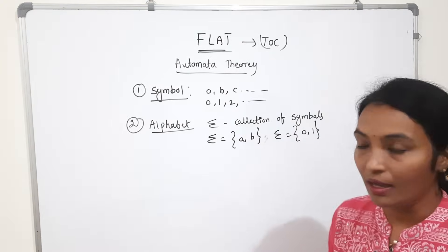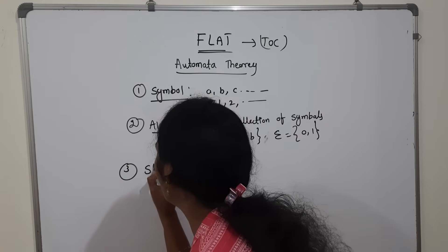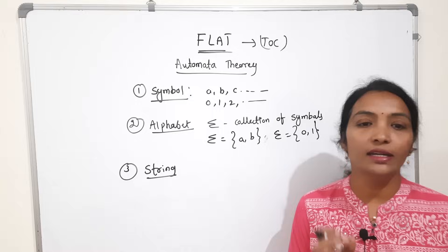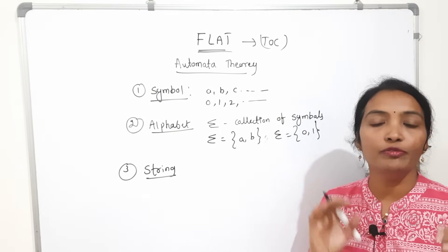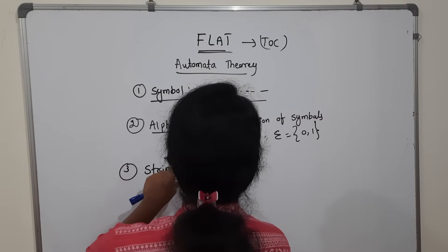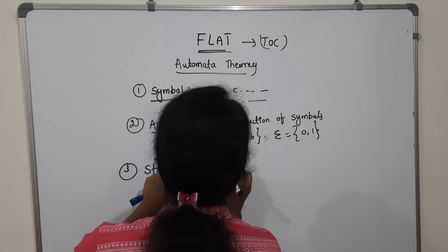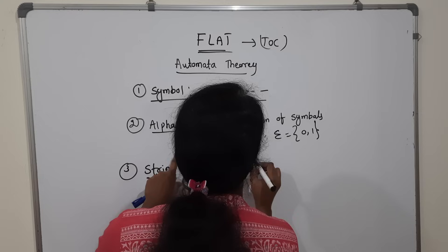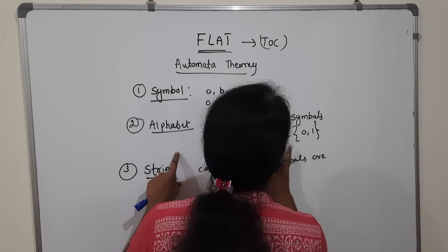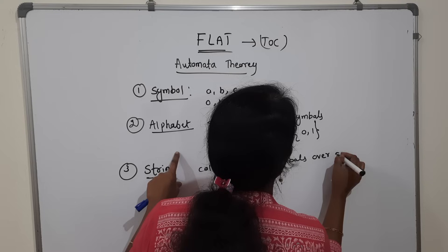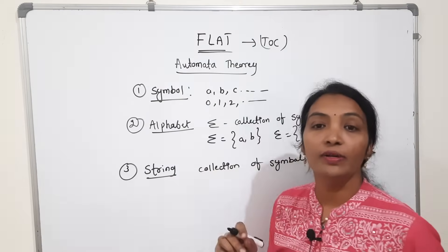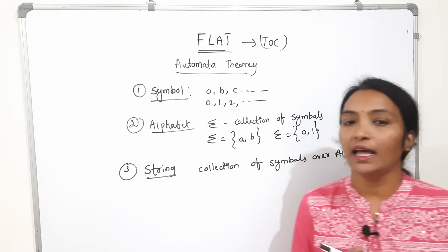Coming to string — what is a string? A string is a collection of symbols over an alphabet. For example, taking alphabet {A, B}, a string is a collection of symbols from this alphabet.